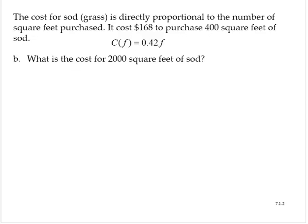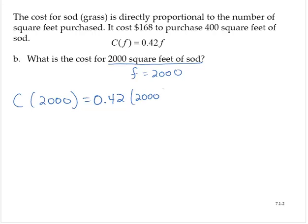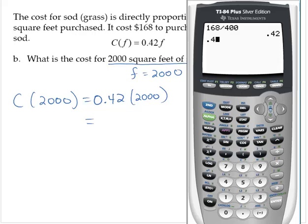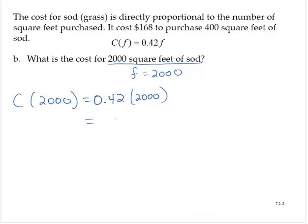What is the cost for 2,000 square feet of sod? 2,000 square feet of sod means that f is 2,000. So evaluating C(2,000), that would be 0.42 times 2,000.